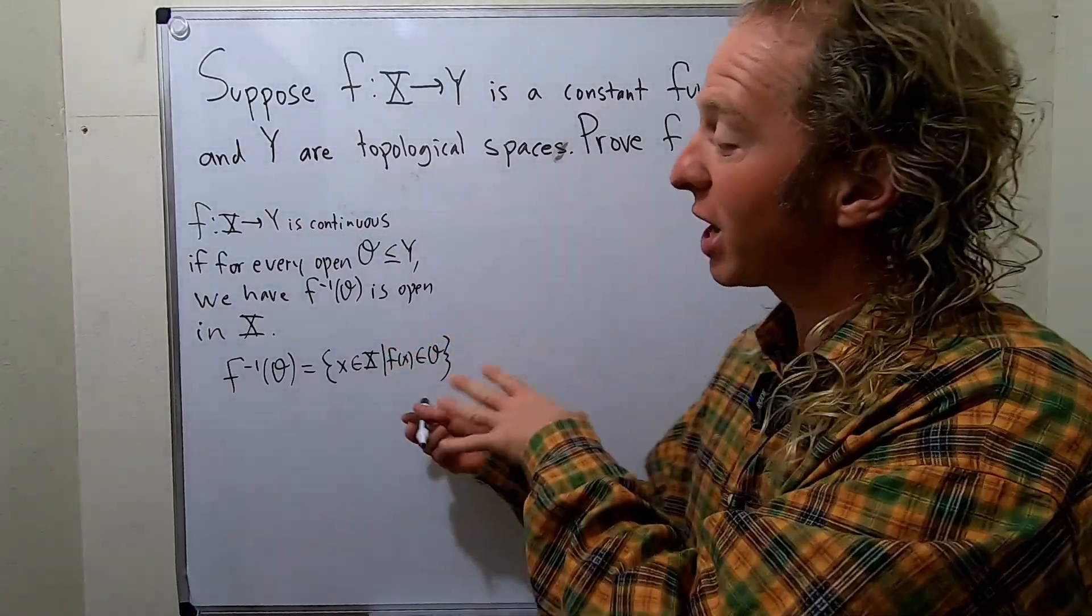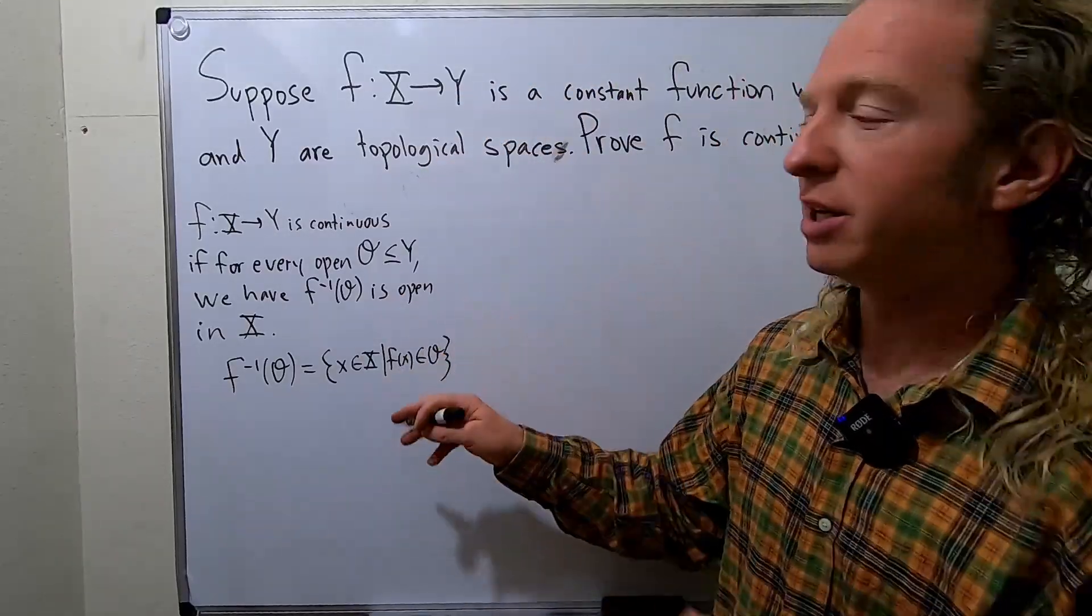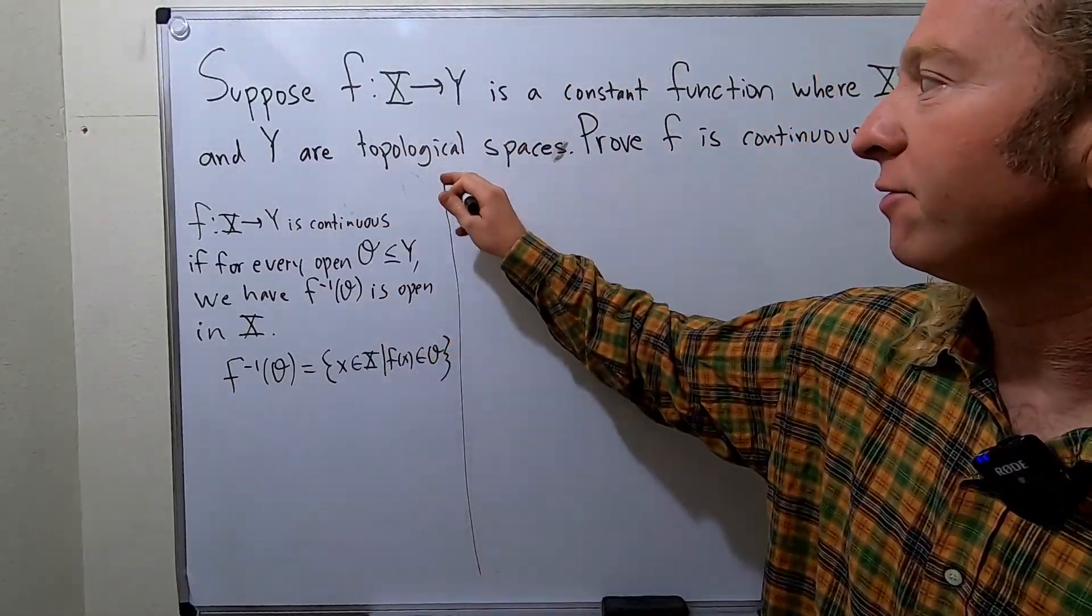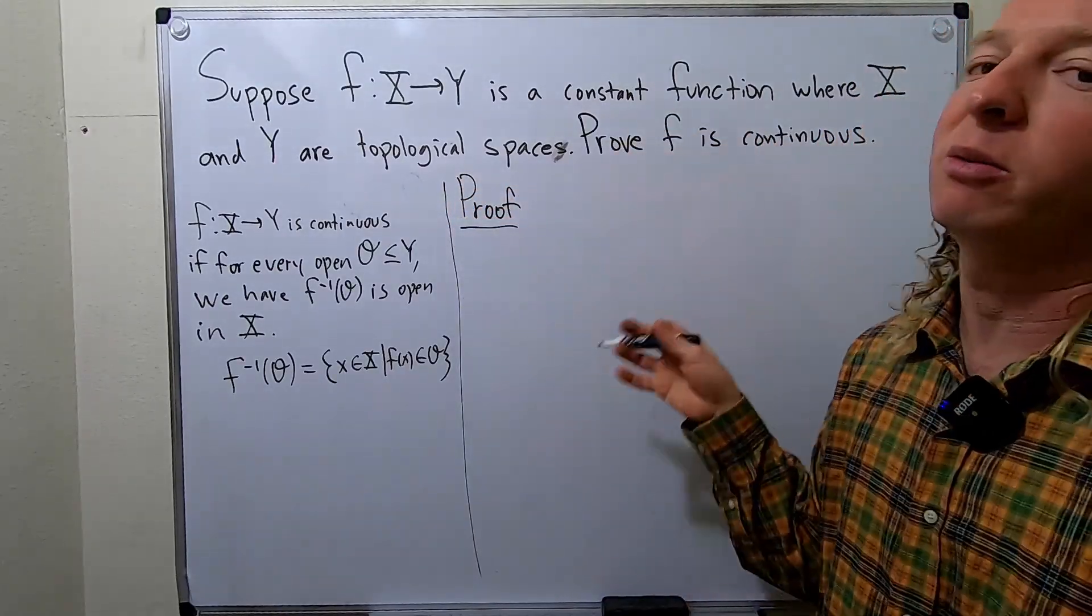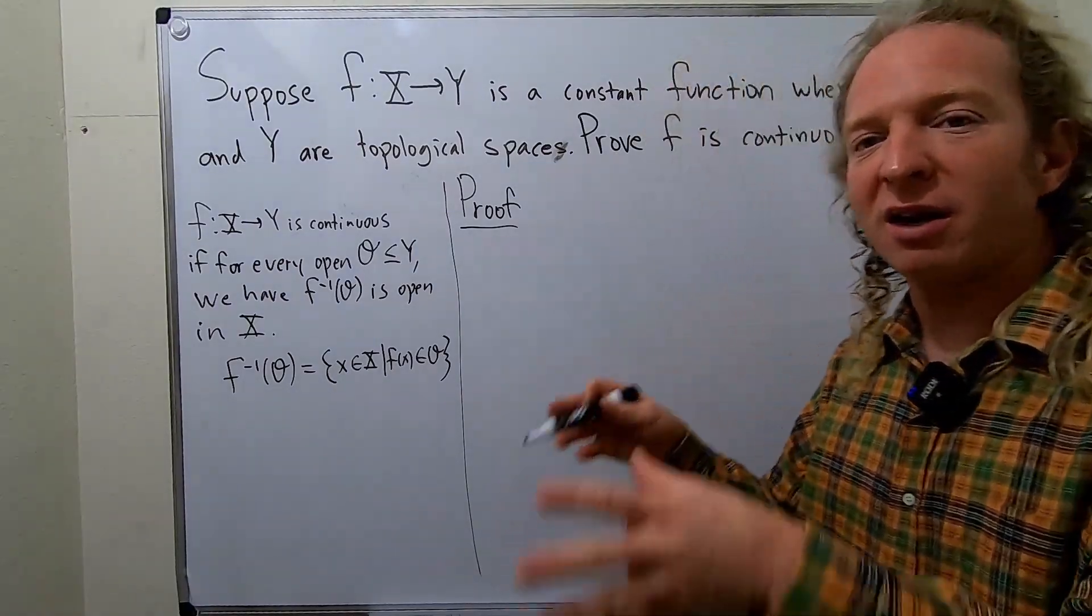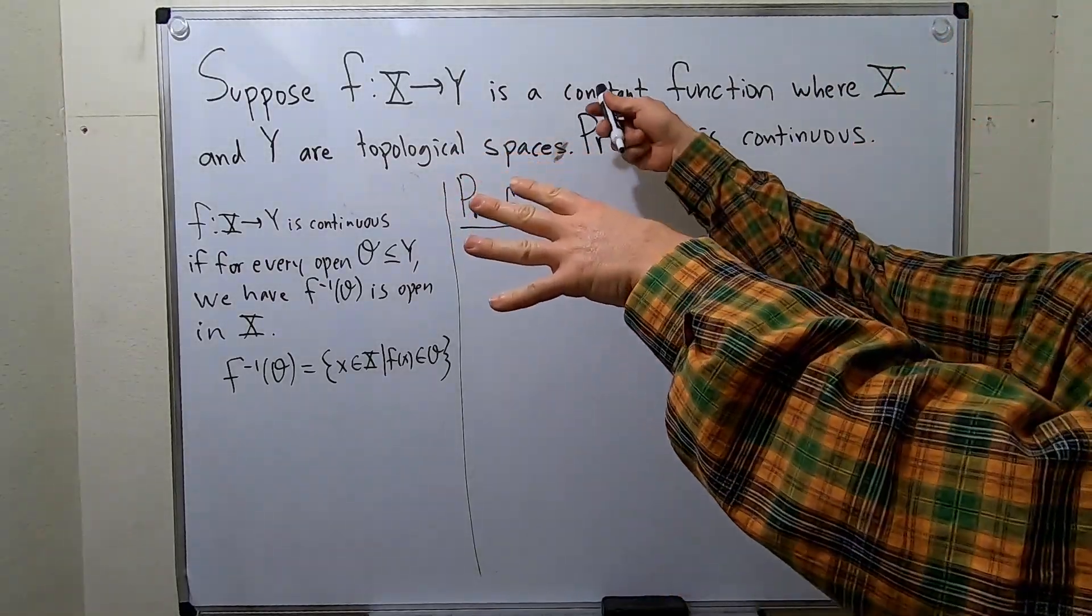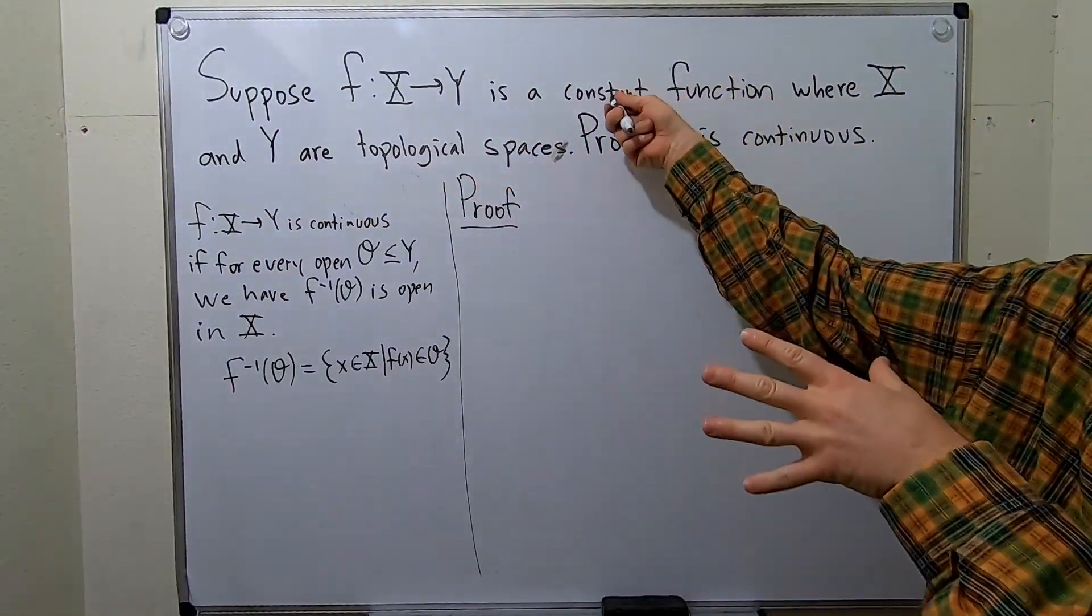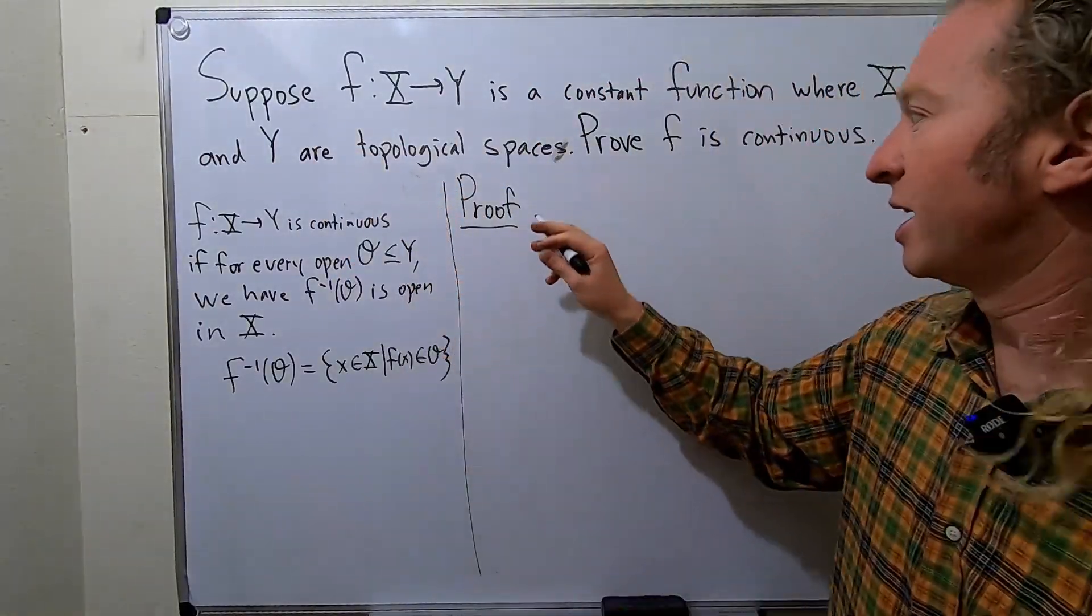So we're going to use this, we actually need this in the proof. So let's go through it. I have looked at the problem before making this video, but I didn't work it out completely, and I want to make sure that I explain it in a way that hopefully you understand. So we'll start by assuming that it is a constant function, that we have a constant function, and x and y are topological spaces. So let's write that down.